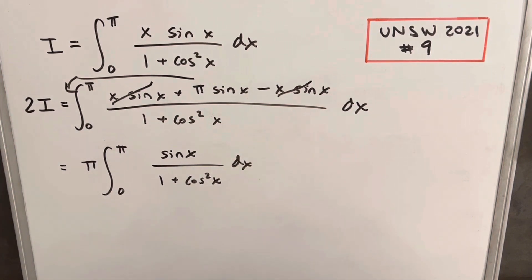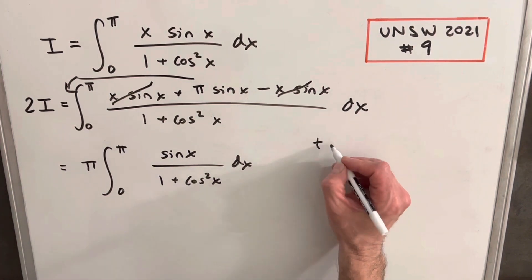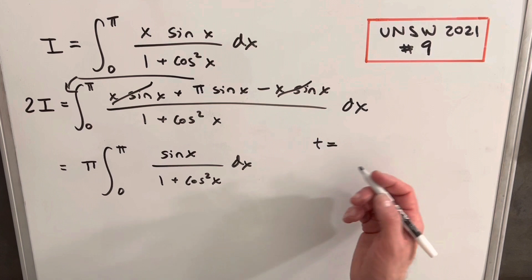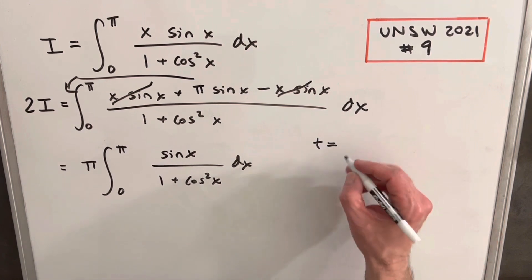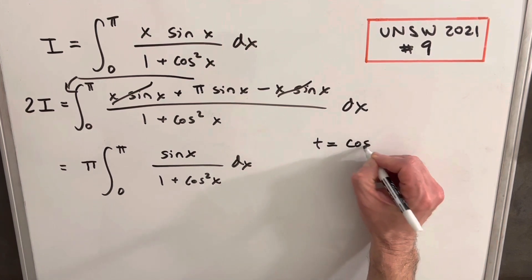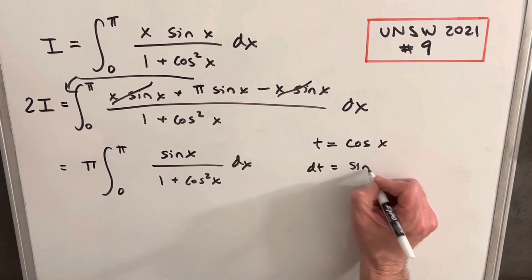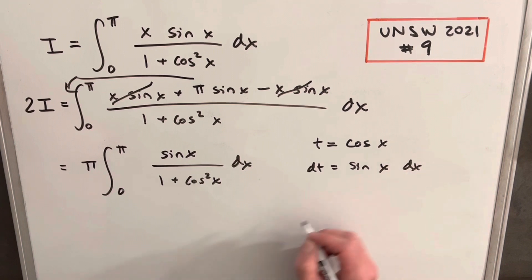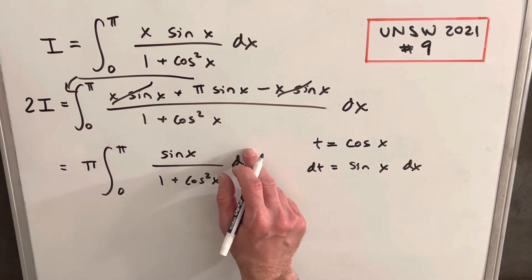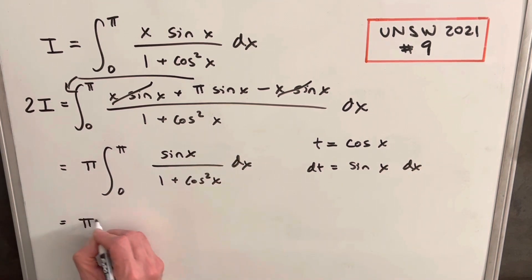And now we're set up for that u substitution we wanted to do originally. And actually what I'm going to do is, instead of doing u, I'm going to do t just to avoid any confusion as we used u before, even though it would be fine. So what I'm going to do is we're going to call our t is going to be cosine of x, and then dt is going to be negative sine x dx. So we have that in the numerator. Then let's do the substitution, but let's fix our bounds first.